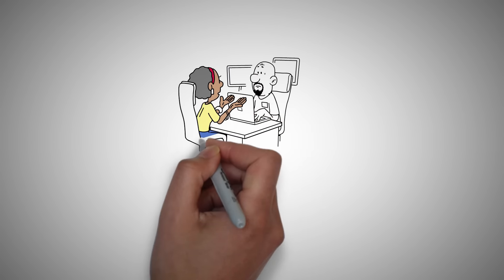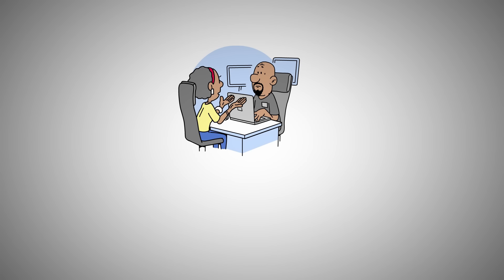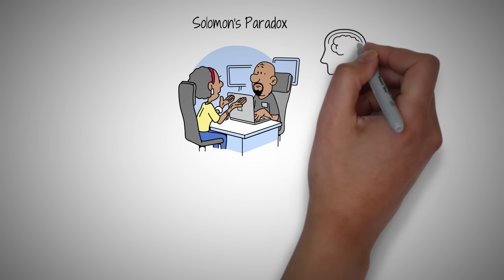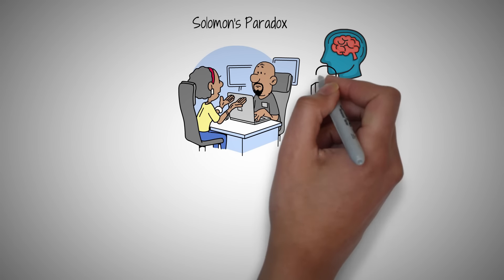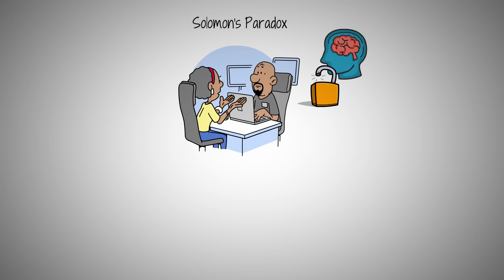Have you noticed that we give better advice to friends than to ourselves? This is known as Solomon's paradox and uncovers a fascinating twist in human psychology that is a surprising part of how we think and can be a secret tool for making our own lives better.